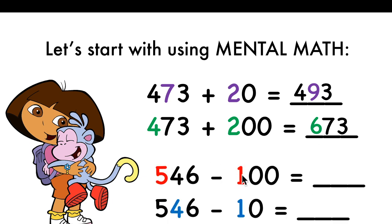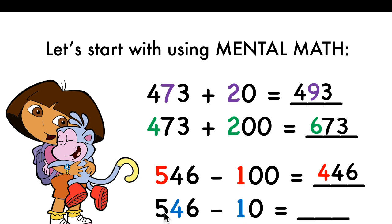When you're taking away hundreds, the hundreds digit is this one. You will take 5 minus 1. How much is 5 minus 1? It is 4. So you will have 4 hundreds. Tens and ones stay the same. When you're taking away tens, you take away from the tens digit. Number 4 is in the tens digit, so 4 take away 1 will be 3. The hundreds and ones stay the same, so the answer will be 536.